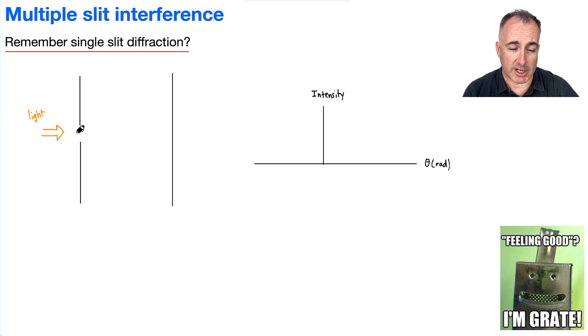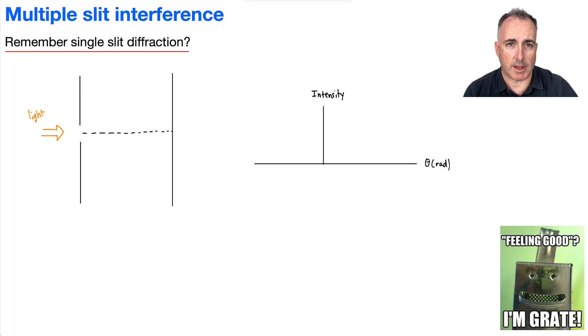Do you remember with light coming into a single slit — what happens is if I draw this as my reference here, I'm going to end up with this big bright dot in the center and then little ones like this.